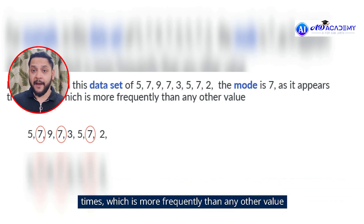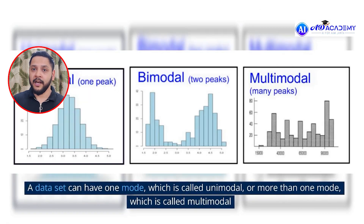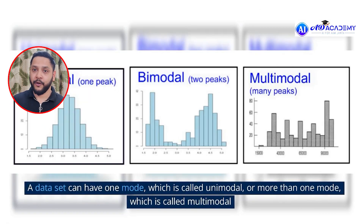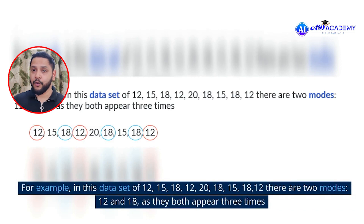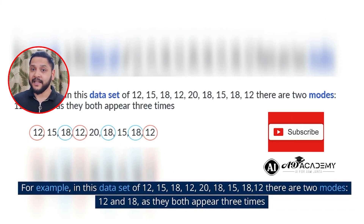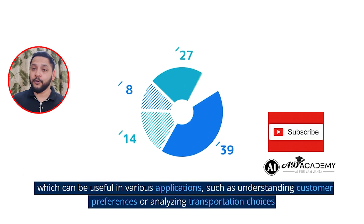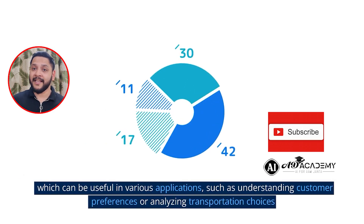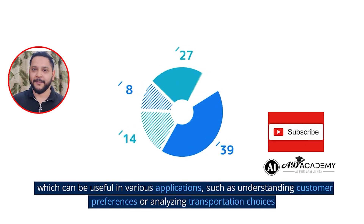A dataset can have one mode, called unimodal, or it can have multiple modes, called multimodal. In this example there are two modes, 12 and 18, which appear three times — more frequently than other numbers. Mode can be very useful in various applications such as customer analysis or analyzing categorical data.